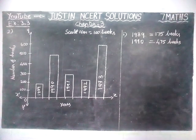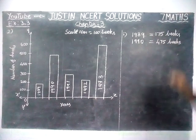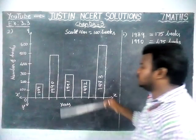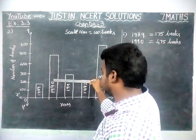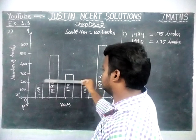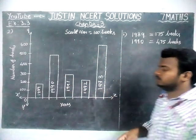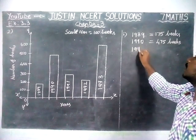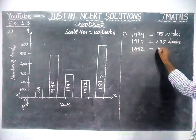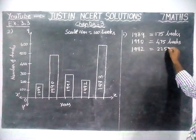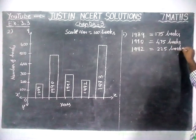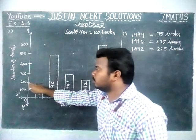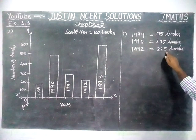Next, in the year 1992: we can check it. This bar is just above 200. So in the year 1992, the total number of books sold is 225 books. By using the scale we can find it — it is just above 200, that is why we have taken 225 books.